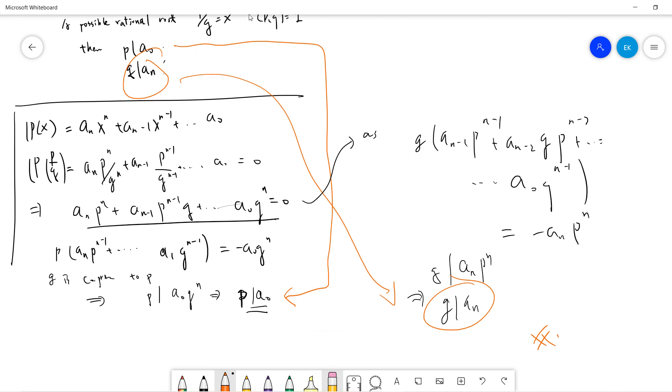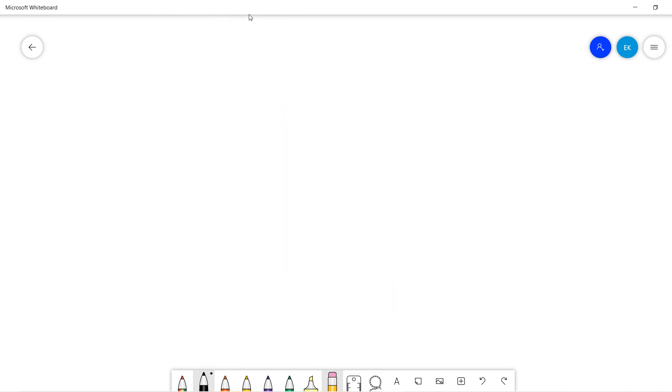Let's talk about an example. Example one: let's say p(x) = 2x^3 + x - 1. So from these things, we know that if our x is p/q, and if I use the rational root theorem, it tells you that p must divide -1 and q must divide 2.